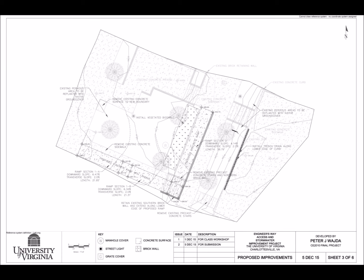The third page is my proposed improvements for the site. This is a good opportunity to talk about my design goals. First of all, I wanted to meet all of the deliverables with a minimum cost outlay. This meant keeping as much of the existing infrastructure as possible.